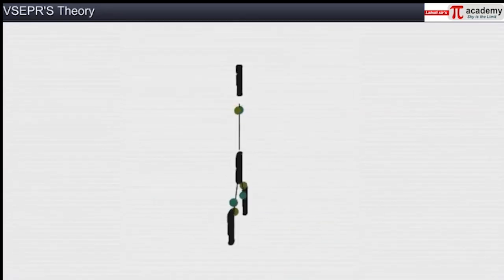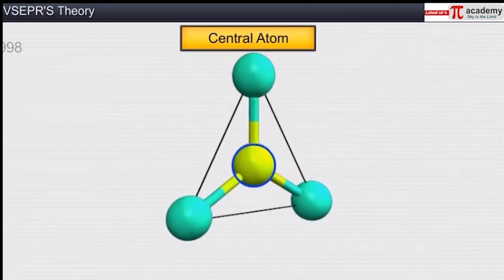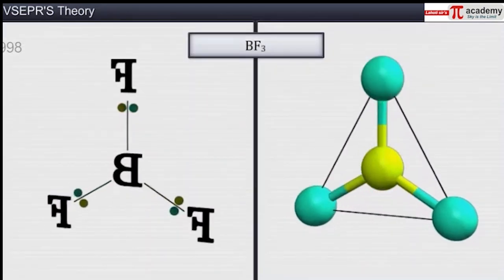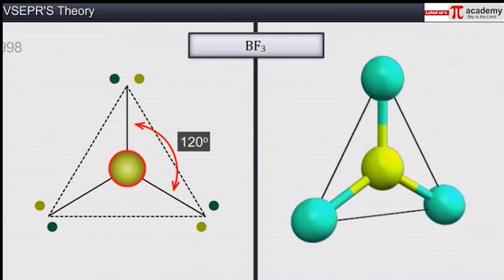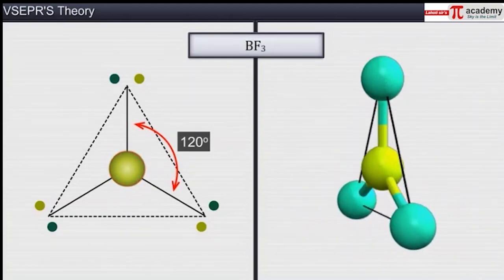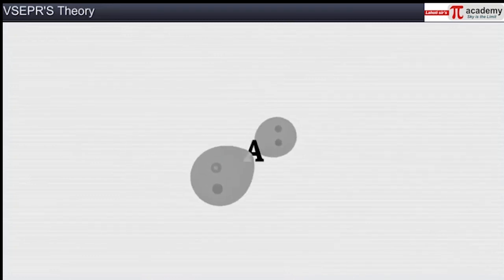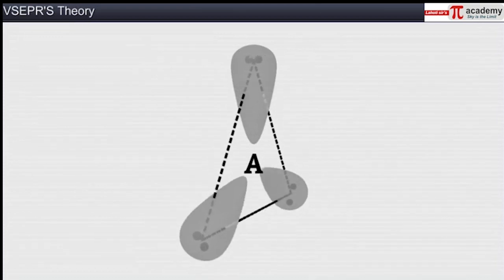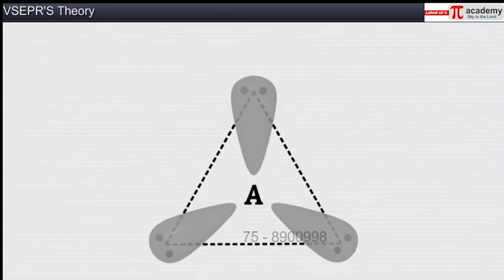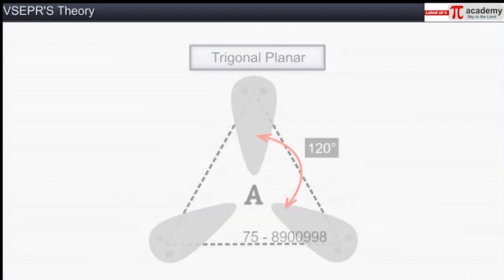The shape of a molecule depends upon the number of valence electron pairs and their arrangement around the central atom. The geometry of a molecule in which the central atom has no lone pair of electrons will be regular, without any distortion. For example, the shape of a molecule with two bonded electron pairs around the central atom will be linear, with a bond angle of 180 degrees. With three bonded electron pairs, the shape will be trigonal planar with a bond angle of 120 degrees.